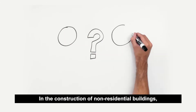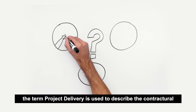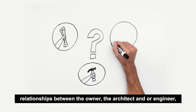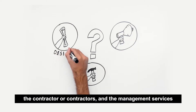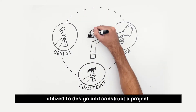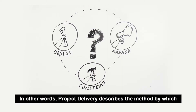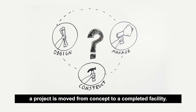In the construction of non-residential buildings, the term project delivery is used to describe the contractual relationships between the owner, the architect and/or engineer, the contractor or contractors, and the management services utilized to design and construct a project. In other words, project delivery describes the method by which a project is moved from concept to a completed facility.